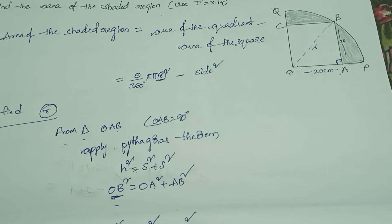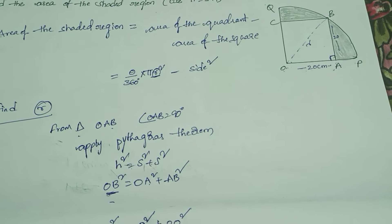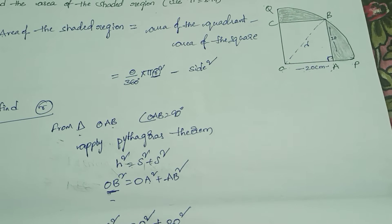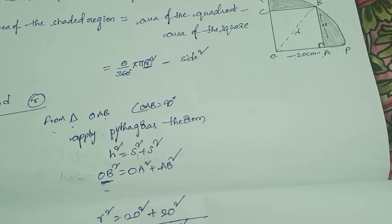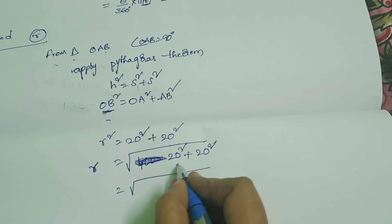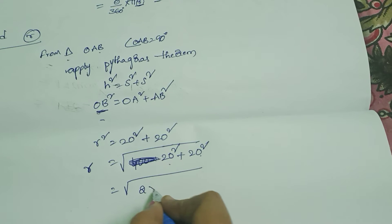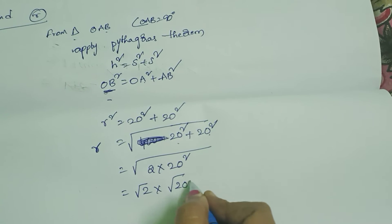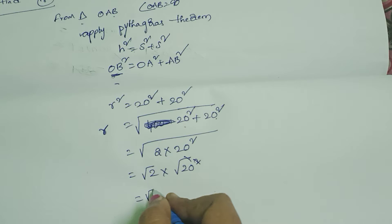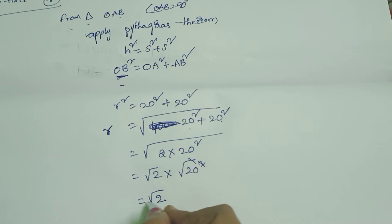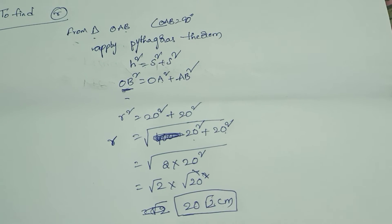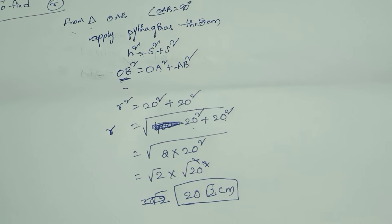So R = √(20² + 20²) = √(400 + 400) = √(2 × 20²) = √2 × 20 = 20√2 centimetres. Therefore, the radius of the circle equals 20√2 centimetres.